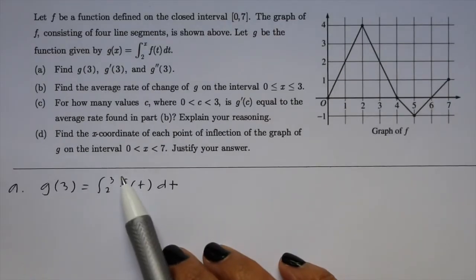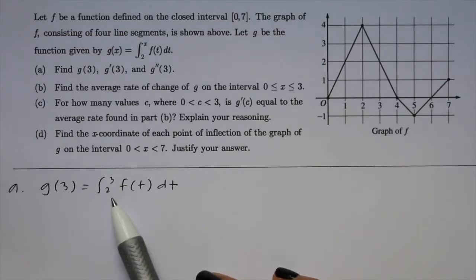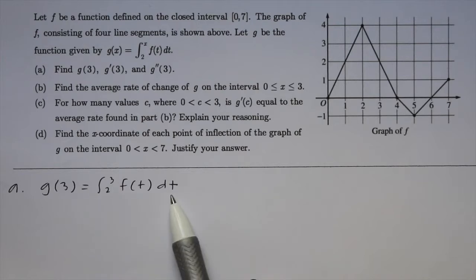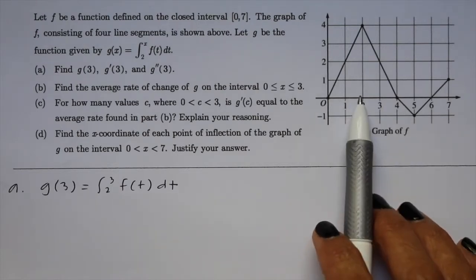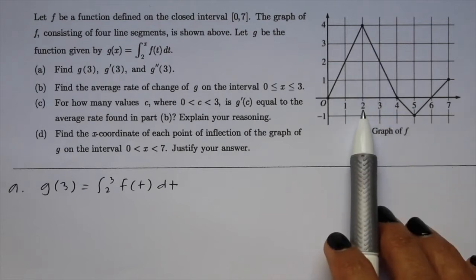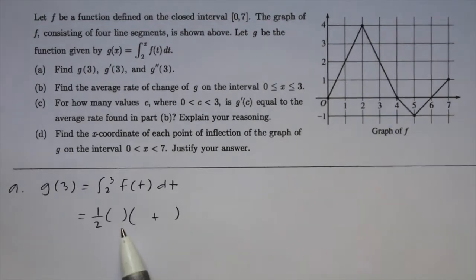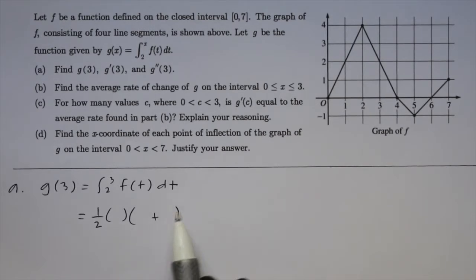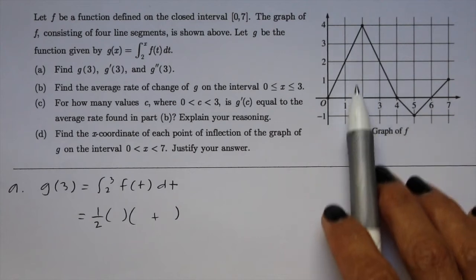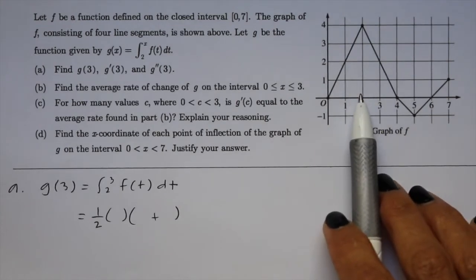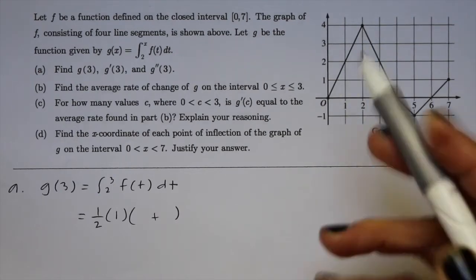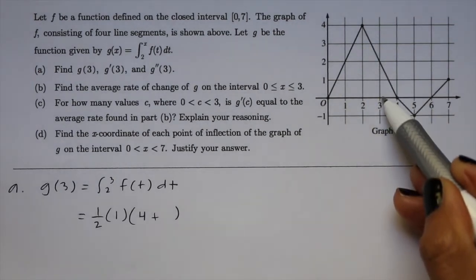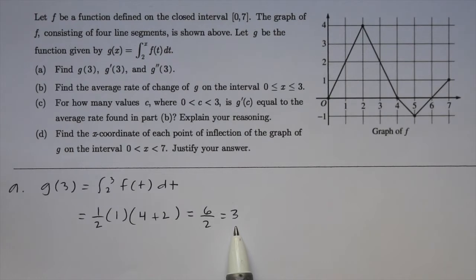To find g of 3, we plug in 3 for x, giving us the integral from 2 to 3 of f of t dt, which is the area under the curve of the graph from 2 to 3. That area is a trapezoid. The formula for the area of a trapezoid is one half the height times base 1 plus base 2. The height is the distance from 2 to 3, which is 1. One base has length 4 and the other has length 2, so the final answer is 3.